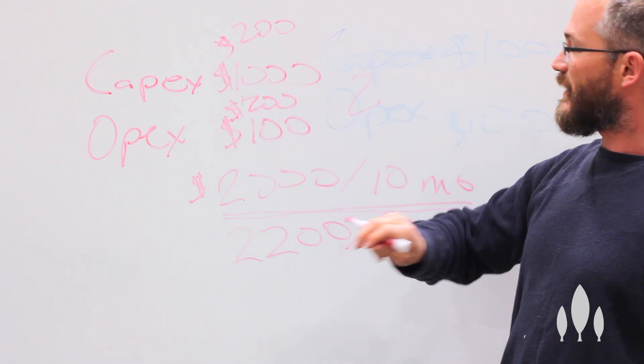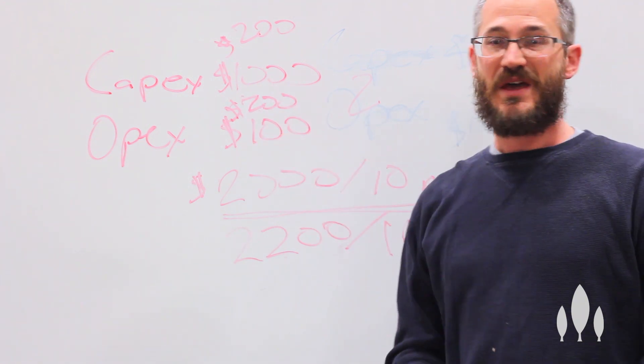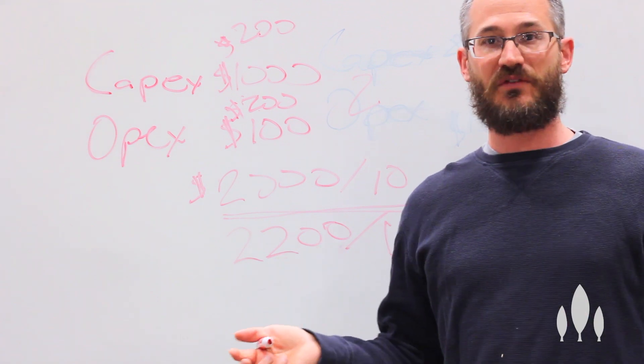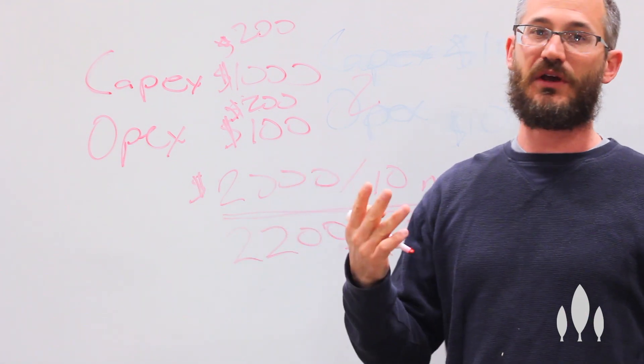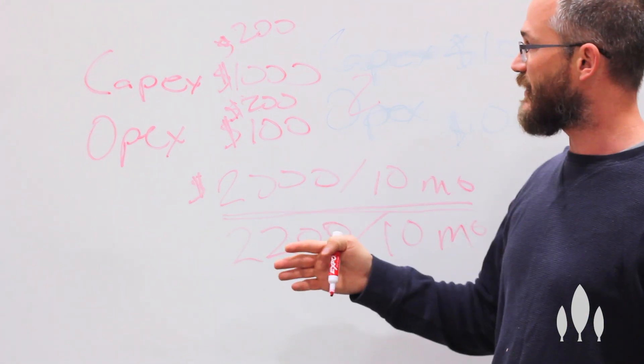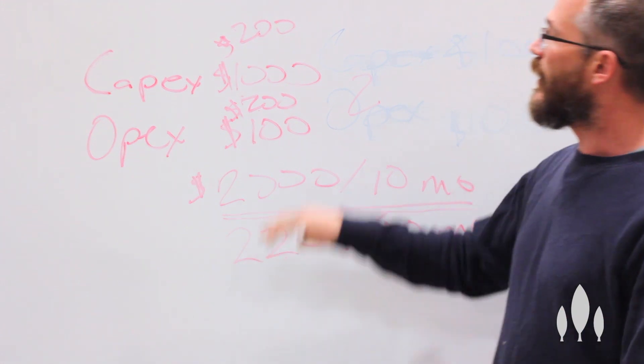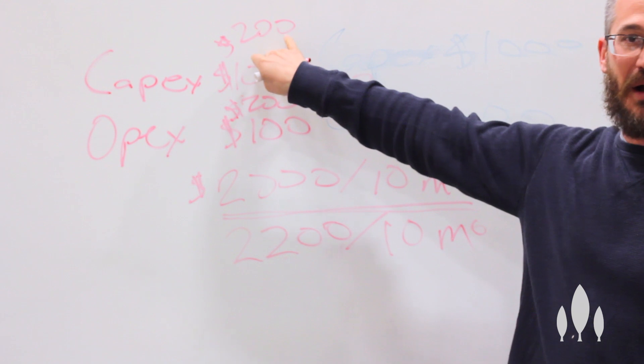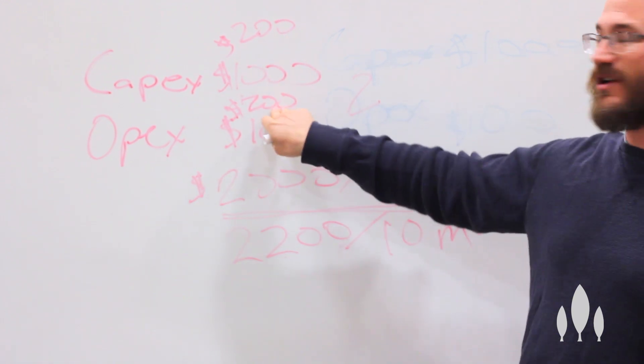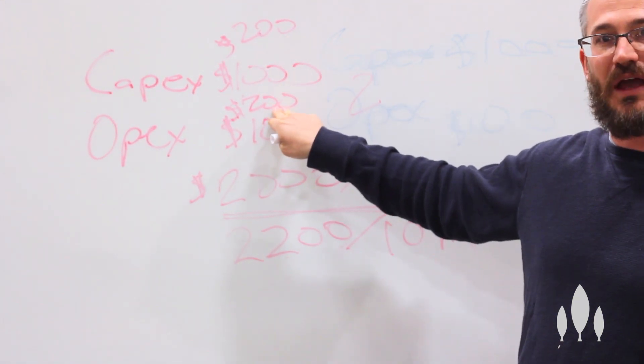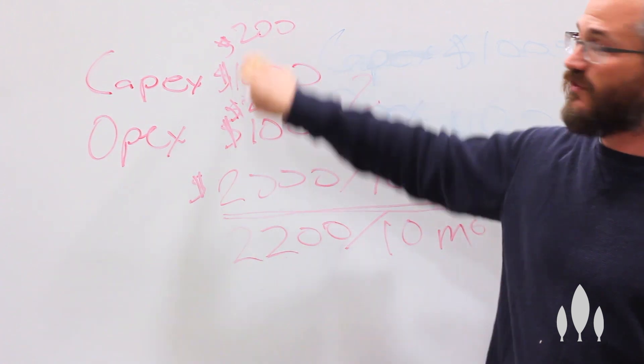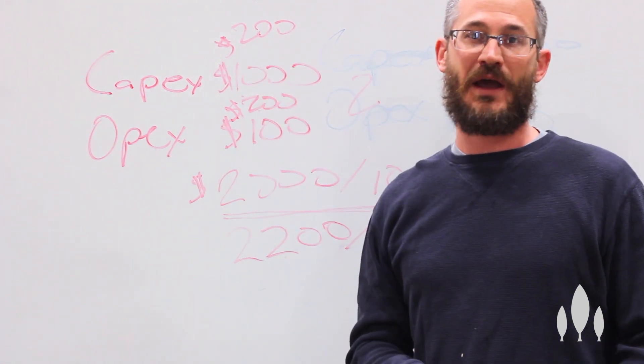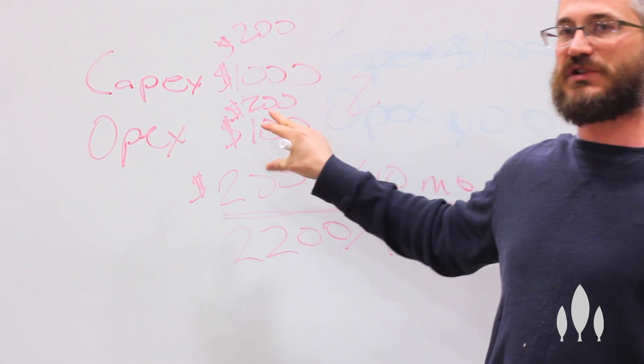Now as time goes on, at the end of year two, we're talking, for LEDs we're talking one thousand plus twenty four times one hundred, that's thirty four hundred bucks total cost after two years. Okay with the LEDs, thirty four hundred bucks. With the traditional HID we're talking two hundred bucks plus twenty four times two, four thousand eight hundred plus two hundred, five grand.